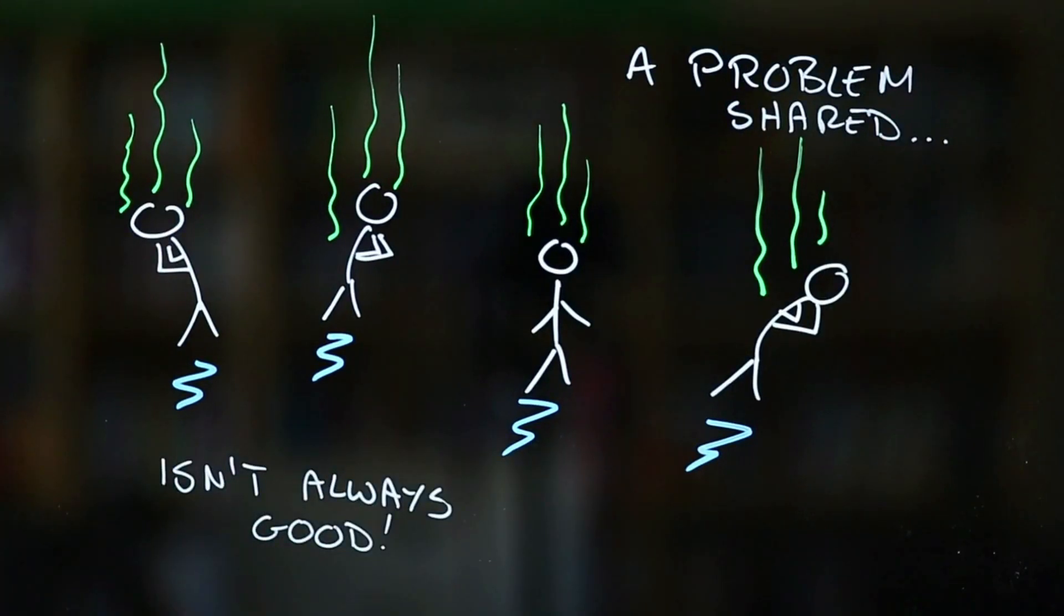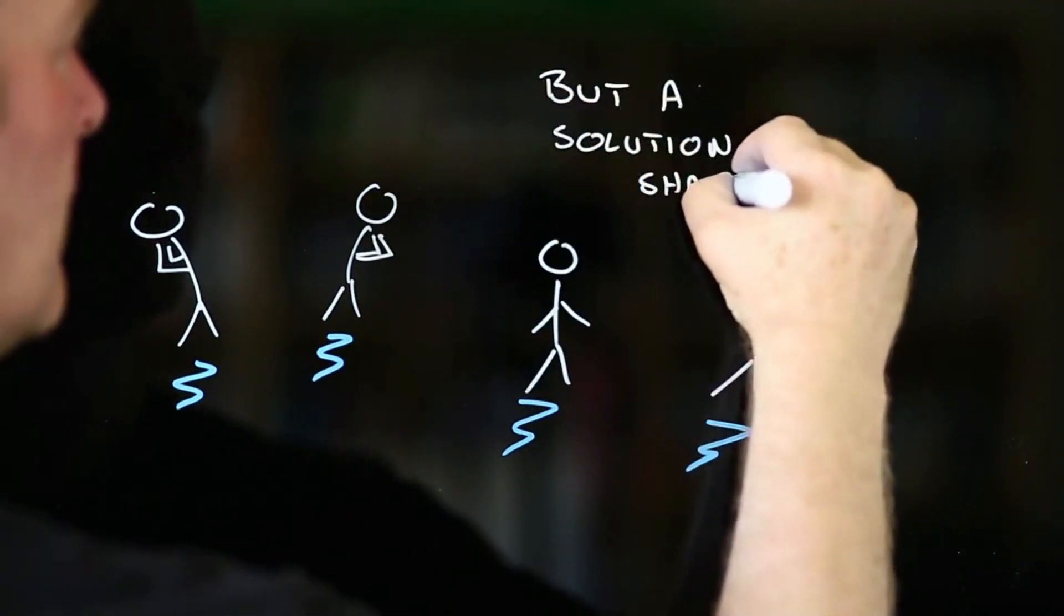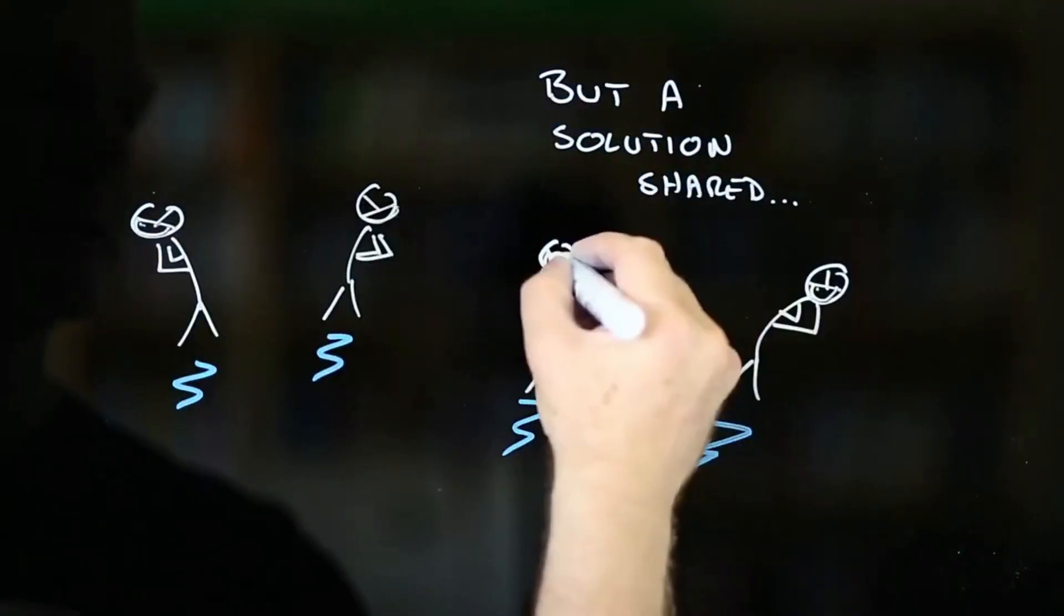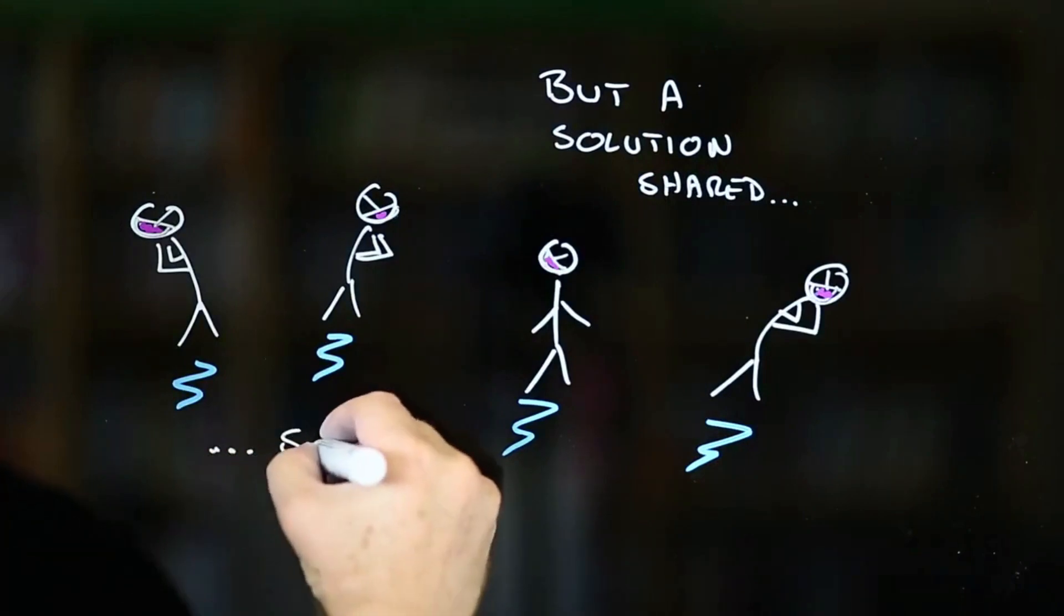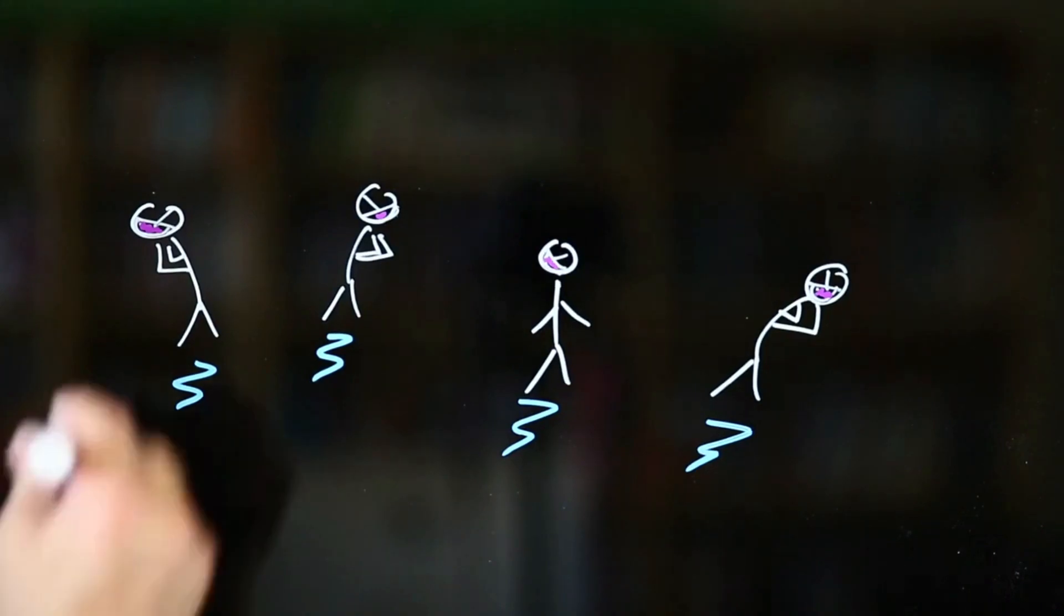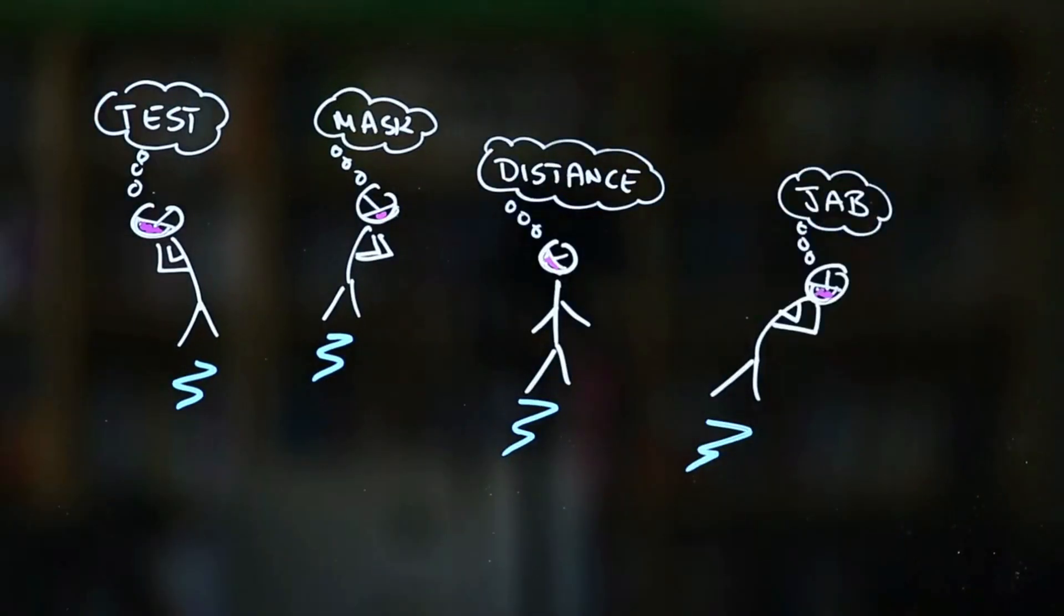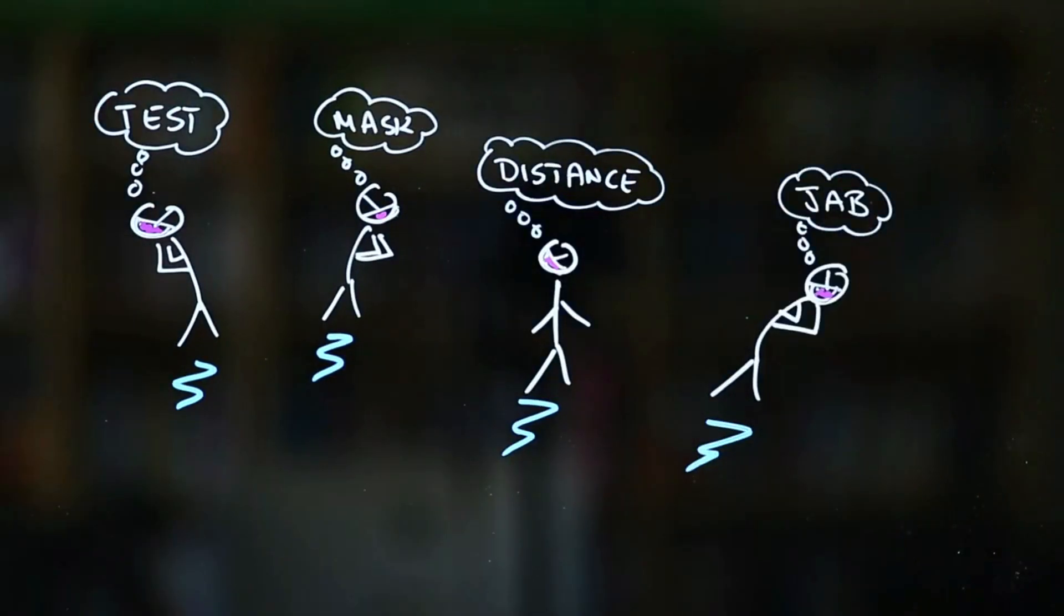But there's more to it than this. Remember, in this hypothetical scenario, your mission is not to catch the virus. And far and away, the most effective way to do this is to do everything you can to ensure that those around you aren't carriers. And no matter how inconvenient they seem, being tested, wearing a mask, keeping your distance and getting the jab are the best ways to do this.